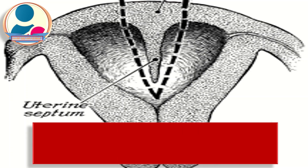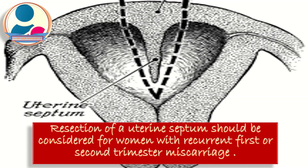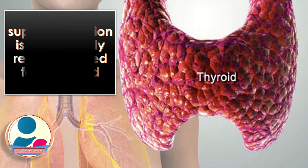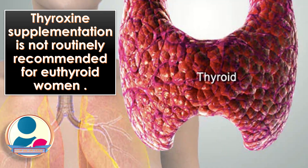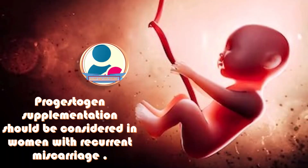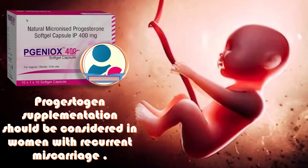Resection of a uterine septum should be considered for women with recurrent first or second trimester miscarriage, ideally within an appropriate audit or research context. Thyroxine supplementation is not routinely recommended for women with thyroid peroxidase antibodies who have a history of miscarriage. Progesterone supplementation should be considered in women with recurrent miscarriage who present with bleeding in early pregnancy — for example, 400 mg micronized vaginal progesterone twice daily at the time of bleeding until 16 weeks of gestation.